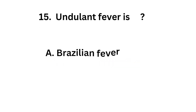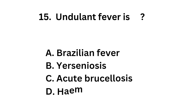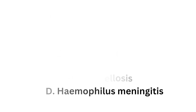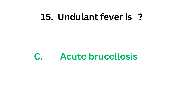Question number 15: Undulant fever is — Option A: Brazilian fever. Option B: Yersiniosis. Option C: Acute brucellosis. Option D: Haemophilus meningitis. The correct answer is Option C, Acute brucellosis. Undulant fever is Acute brucellosis.